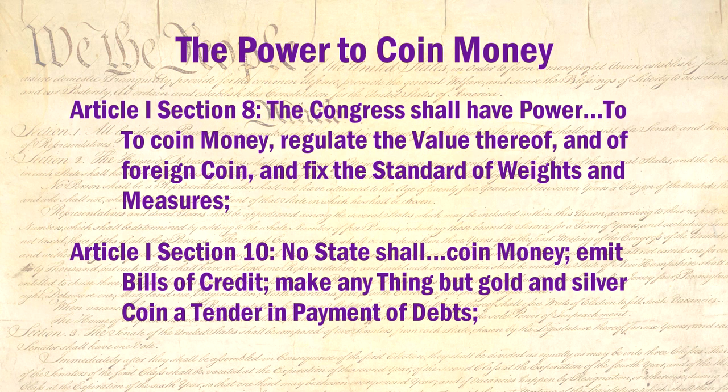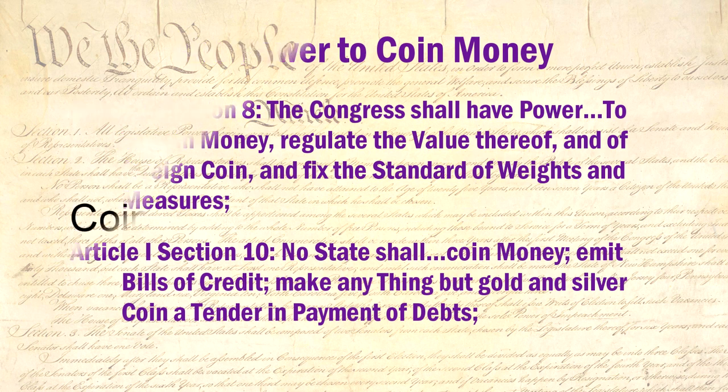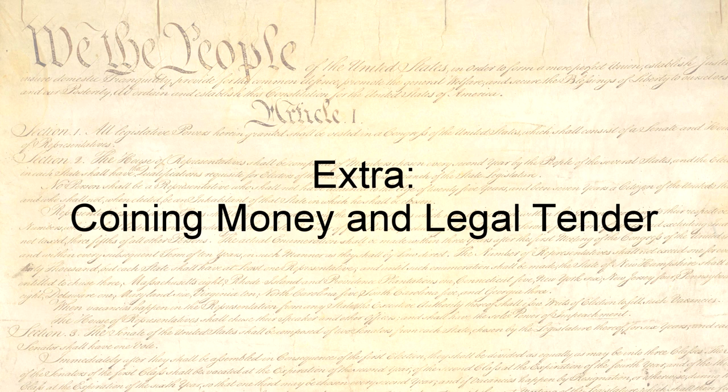It is a vital part of any legal system that legal documents must at least be self-consistent, and this is especially true of the Constitution. Saying that the power to coin money includes legal tender in one section, but doesn't include it just two sections later, violates this very important principle of justice. The federal government has no power whatsoever under the Constitution to establish a legal tender, and the states can ONLY establish gold and silver as legal tender — nothing else. To say that the meanings of words and phrases in the Constitution are not even self-consistent is to open the door to any kind of interpretation you want, and justify any abrogation of our rights, any power the government wants to grab, and any tyranny they want to engage in.